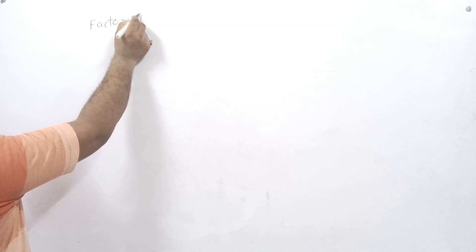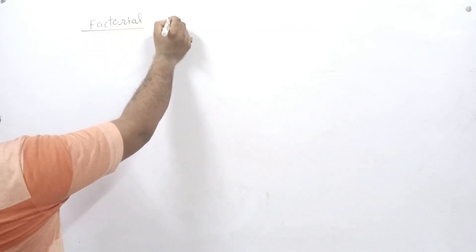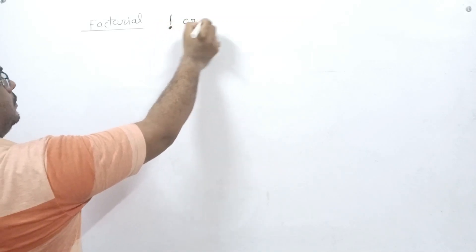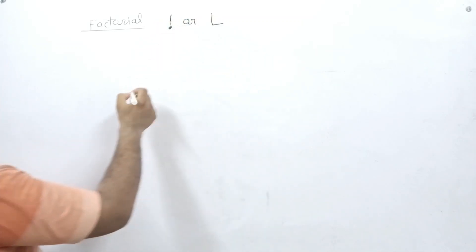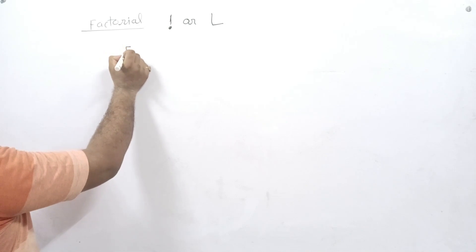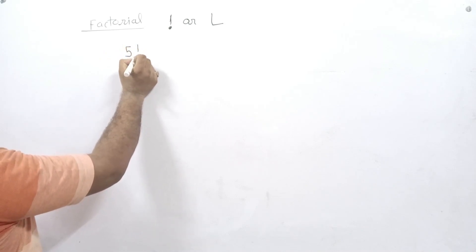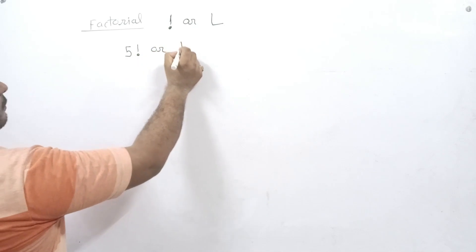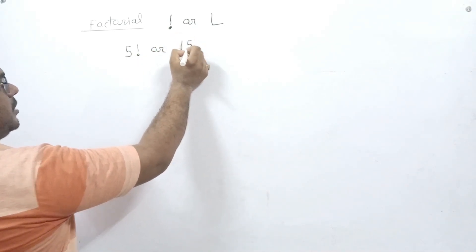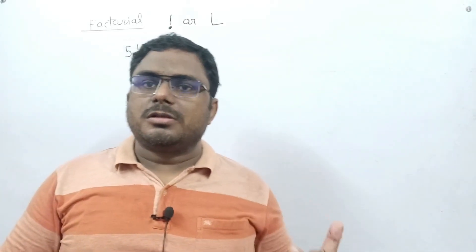Factorial. The symbol of factorial is either this sign or this sign. For example, if I want to say 5 factorial, then I will write it as 5! or factorial 5. Now, what is the meaning of this? And what does this symbol do?